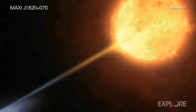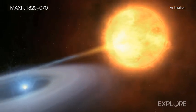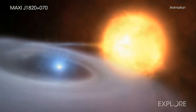The black hole's strong gravity pulls material away from the companion star into an X-ray emitting disk surrounding the black hole.